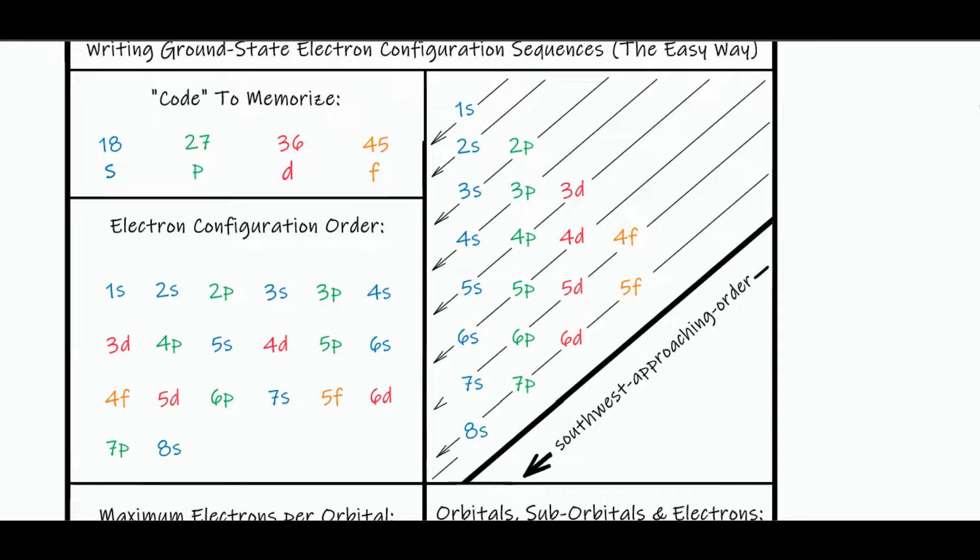And next thing you know it, writing the ground state electron configurations for elements and ions becomes very simple. And this chart really makes things efficient and easy to populate.